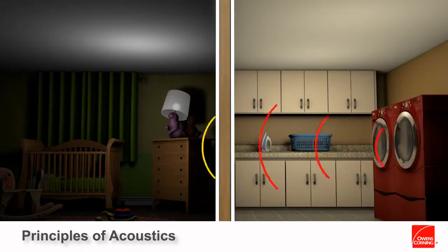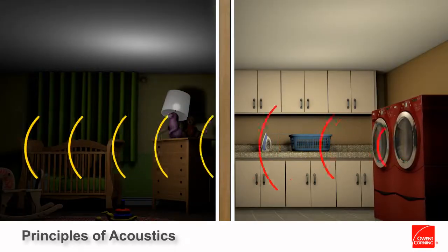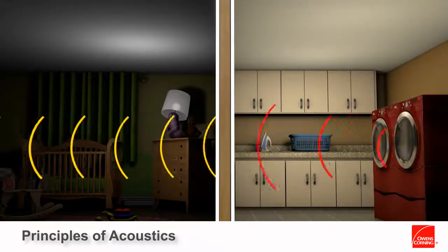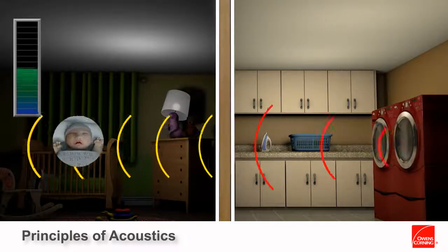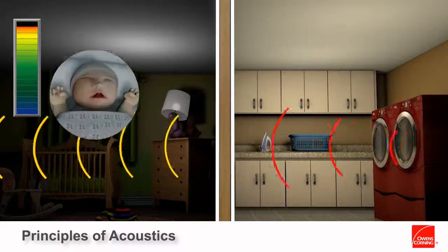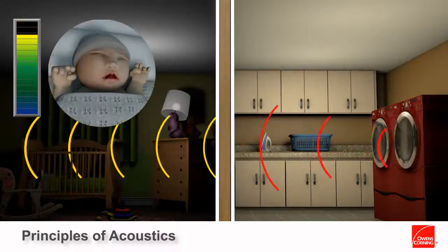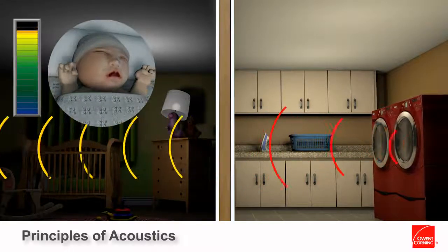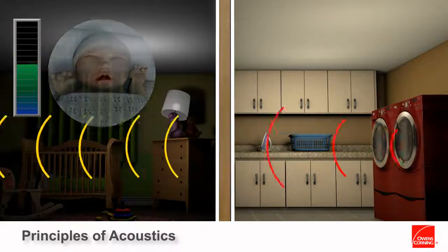There are four main principles that can be consistently applied across acoustic designs to increase a partition's STC rating, reducing noise from adjacent spaces.